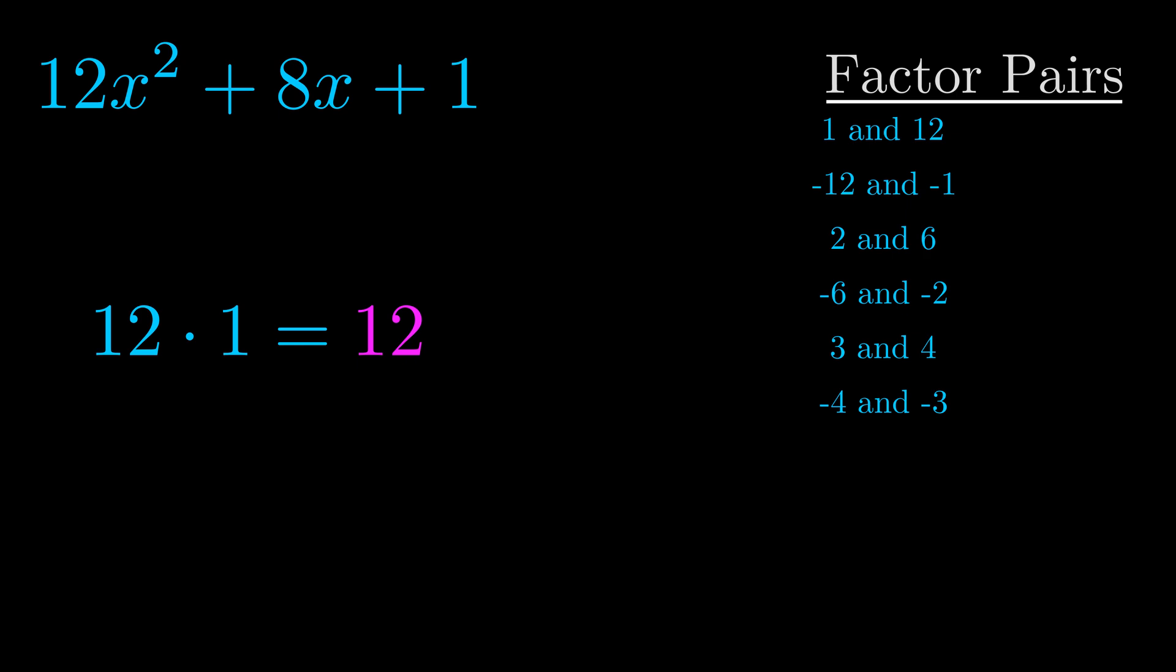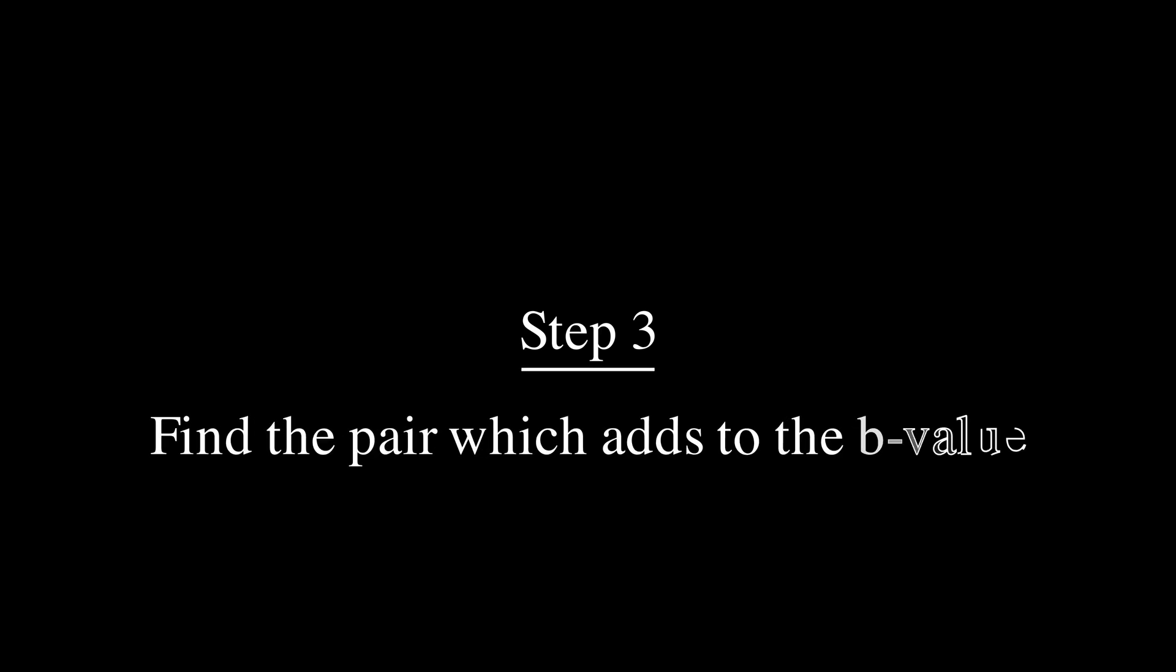Now once you have these factor pairs, the goal is to find which of these pairs adds to the b value. The b value is the coefficient on the x term.